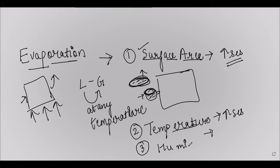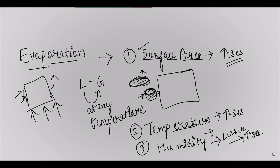The third factor is humidity. On a humid day with lots of water vapor in the atmosphere, wet clothes do not dry easily because there is already a lot of water vapor in the air. If humidity is lesser, then only the rate of evaporation gets increased. So high humidity decreases the rate of evaporation, and low humidity increases it.